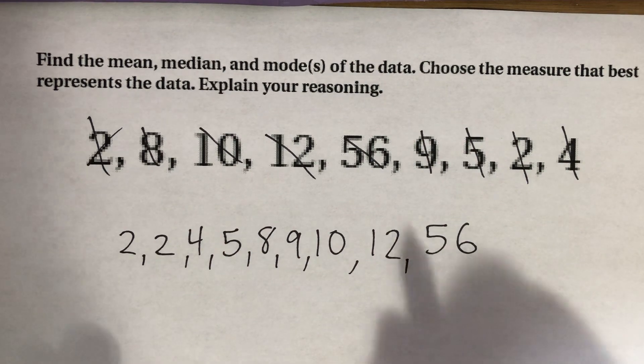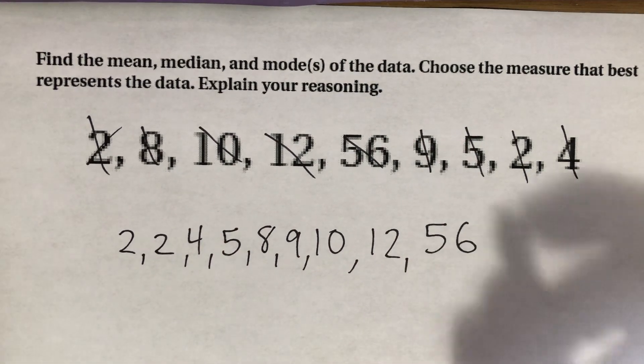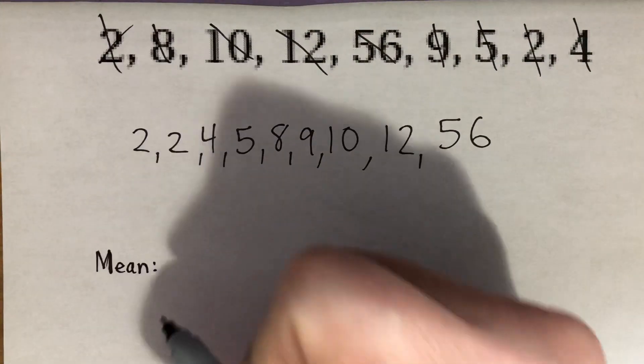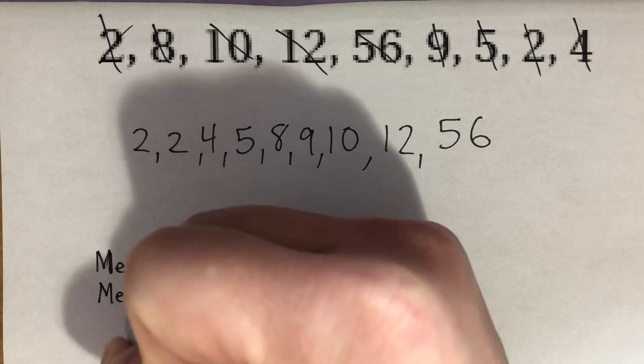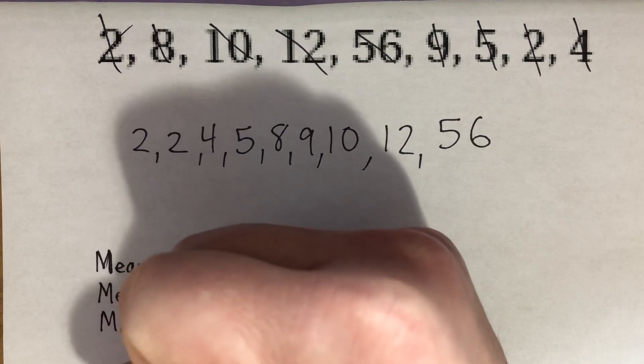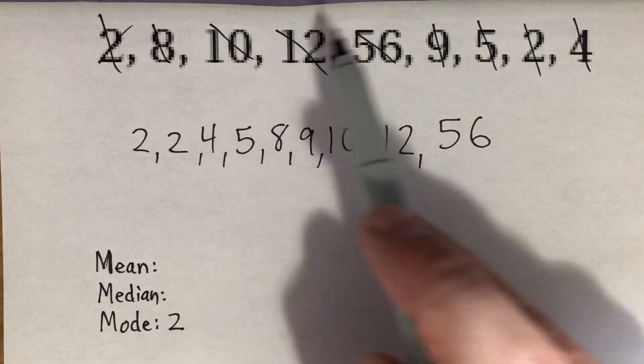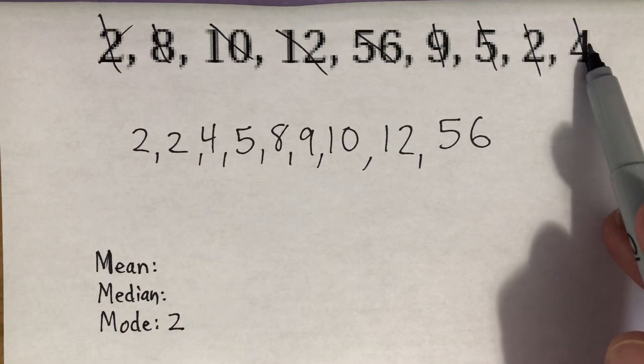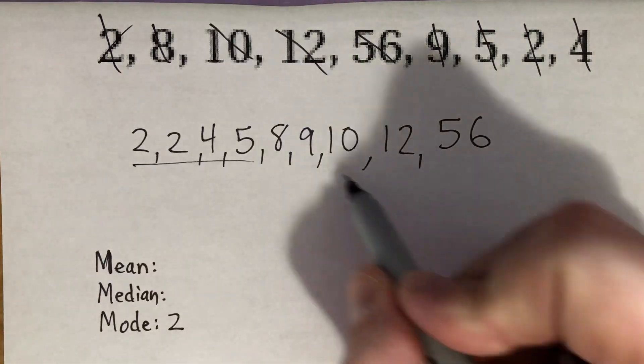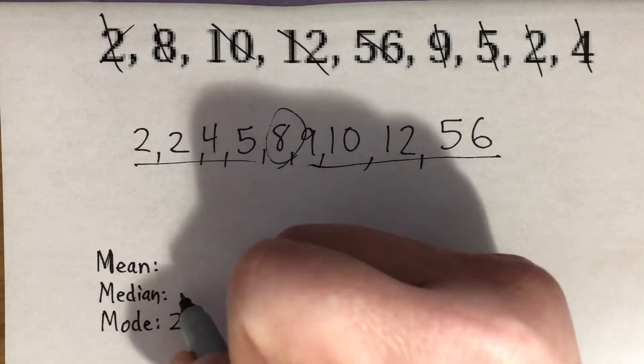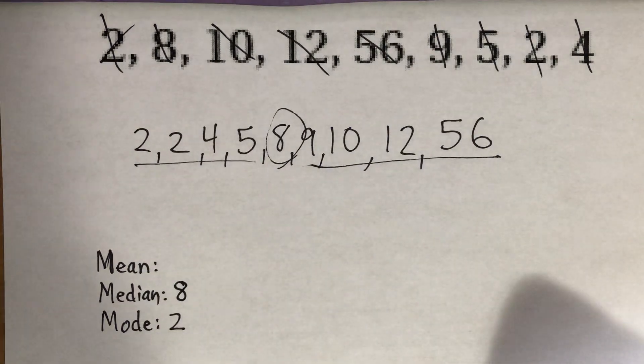And so our median is very likely going to be our best measure. But let's go ahead and check them all. So we're looking for the mean, the median, and the mode. And always start with that easy one, that mode is clearly 2 that occurred two different times. As far as finding the middle data, let's count 1, 2, 3, 4, 5, 6, 7, 8, 9. So there are nine numbers, which means that there's four to the left, four to the right, and then that 8 would be the middle number. And so 8 is my median, nice and easy to identify.